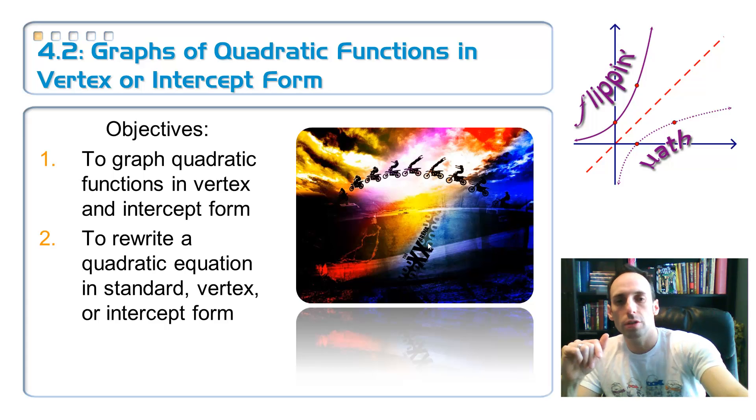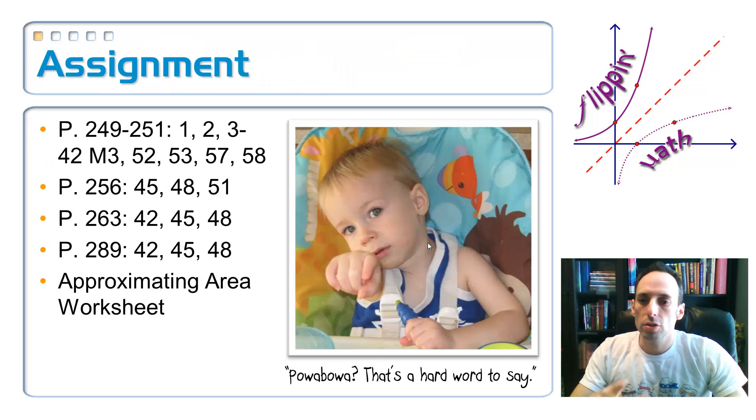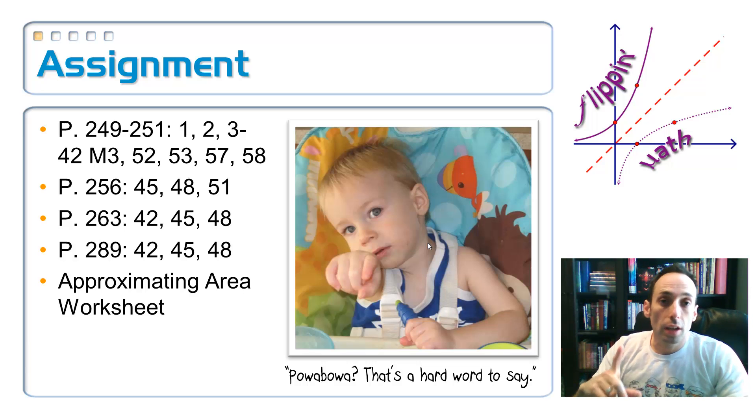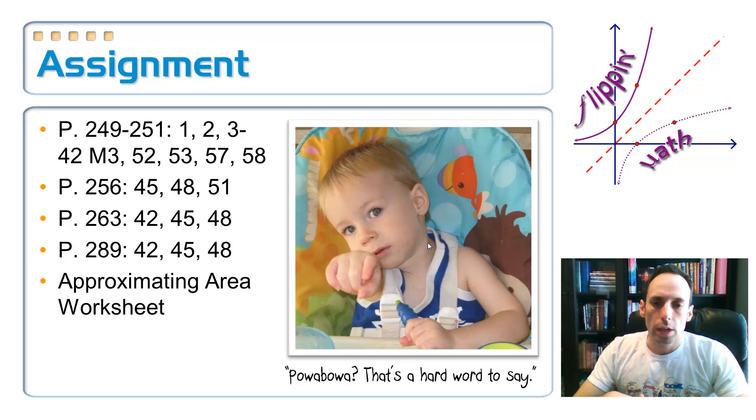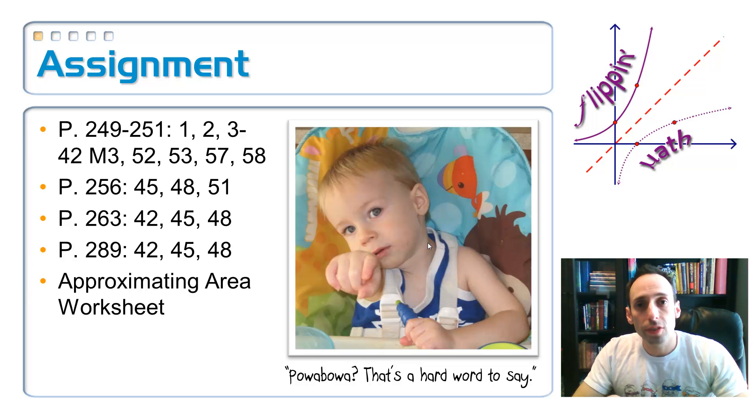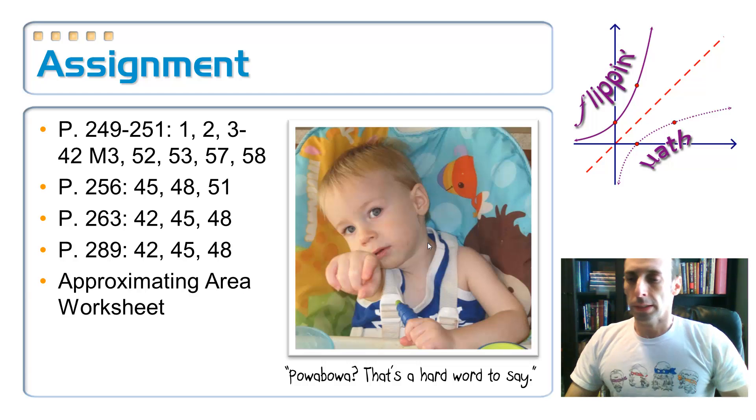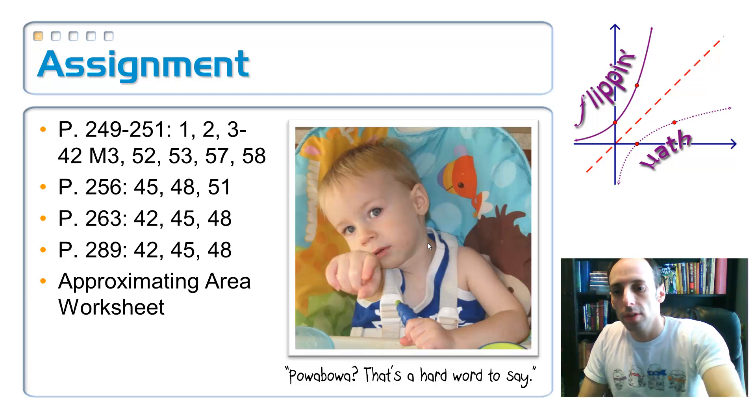So here's your assignment. Make sure you print out your little approximating area worksheet for next time. And in case you're wondering, right underneath Rowan there, his little quote, I asked him to say parabola and he says powabola. And then he commenced to explain to me that it was a pretty hard word to say, so just saying. Oh yeah, see you in class.